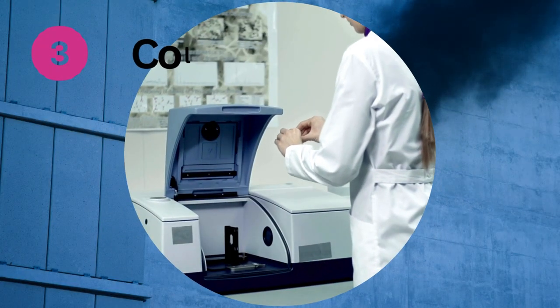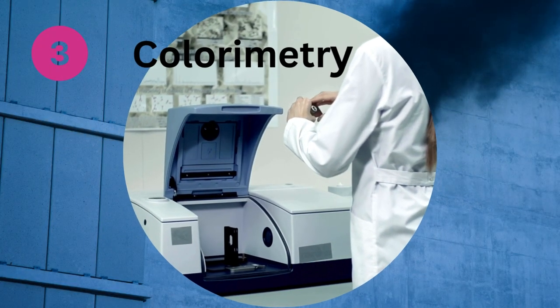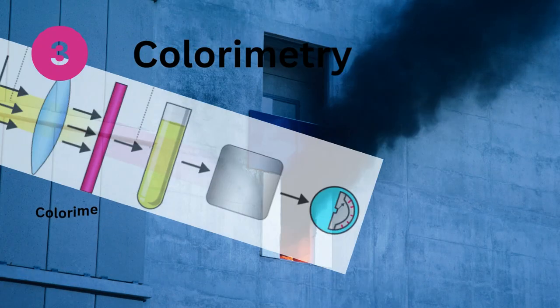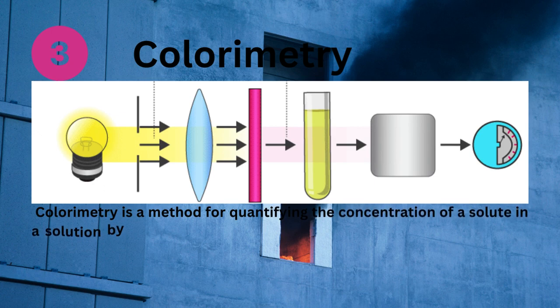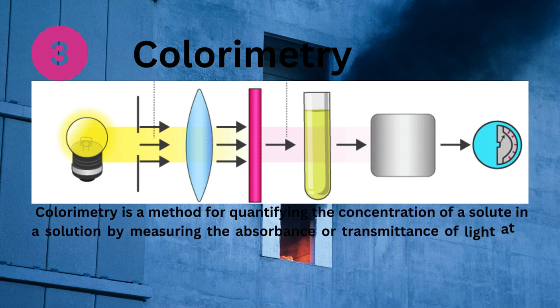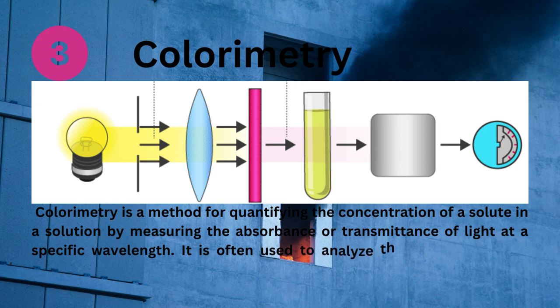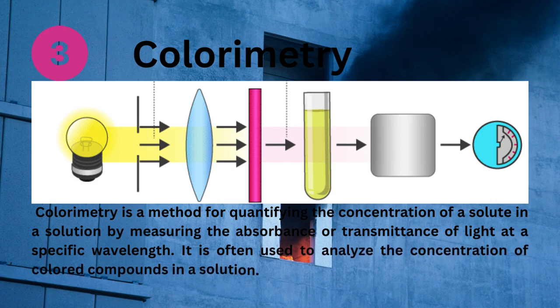Colorimetry: Colorimetry is a method for quantifying the concentration of a solute in a solution by measuring the absorbance or transmittance of light at a specific wavelength. It is often used to analyze the concentration of colored compounds in a solution.